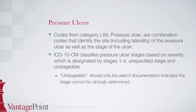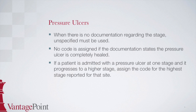A sixth character of 0 indicates that the ulcer is unstageable. This is only to be used if documentation states that the stage of the ulcer cannot be clinically determined. If documentation states that a pressure ulcer is completely healed, the ulcer would not be coded. If the patient is admitted with a stage 1 pressure ulcer of the left buttock and the ulcer progresses to a stage 2 during the hospital stay, the ulcer is reported as stage 2 — you code for the highest stage reported for that site. Also, if a patient has a stage 2 ulcer on the left buttock and a stage 1 ulcer on the right buttock, you are going to report two codes, one for each side.